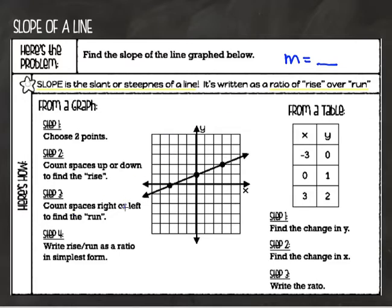Alright, we've got a graph with a line on it. First of all, if I look at this line, it's a straight line — number one. It's got a constant rate of change. The same thing is happening over and over again from one point to the next.